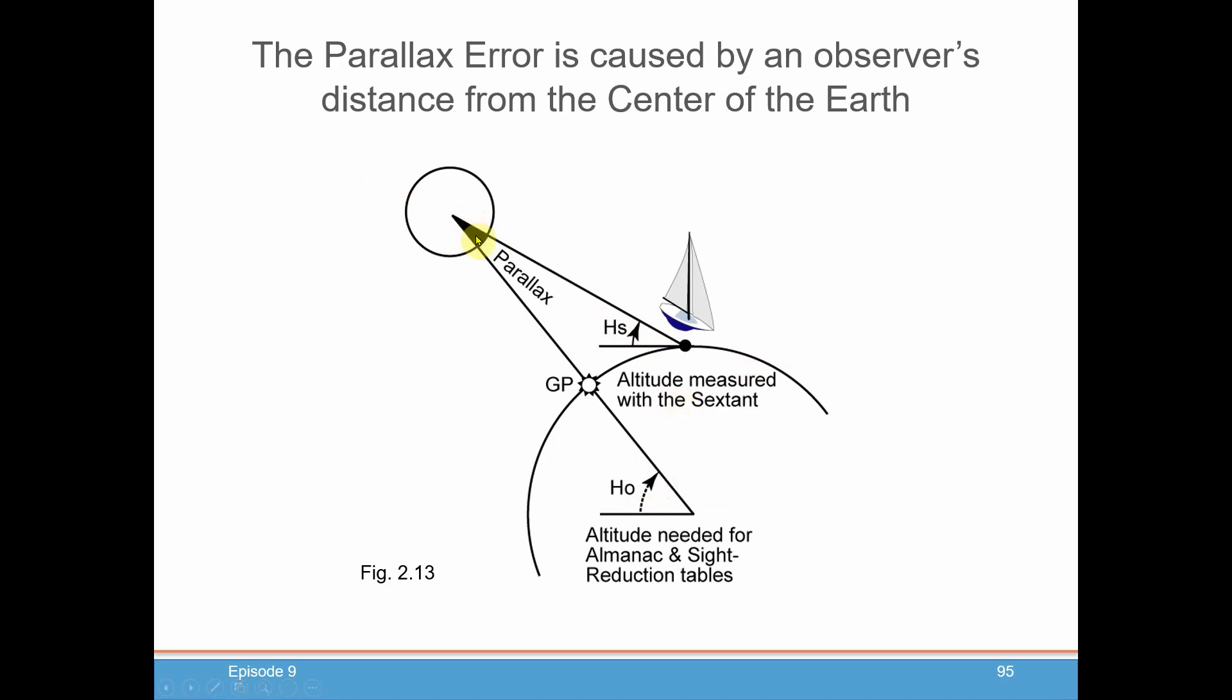For the sun, there's a very small correction, maybe a couple of tenths of a minute. But for the moon, it'll be many, many minutes of angle that we have to handle for parallax because the moon is just so close to us. There's also sometimes a small parallax correction for Venus and Mars. But again, it's small. And when we get to planets and the moon, we'll be going over that.